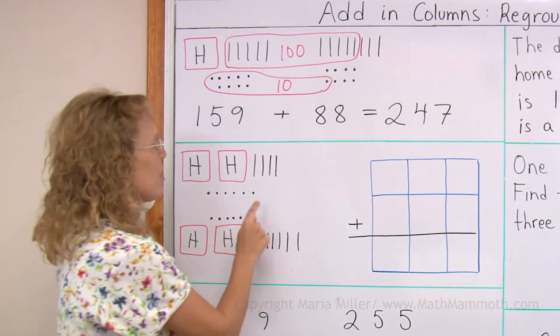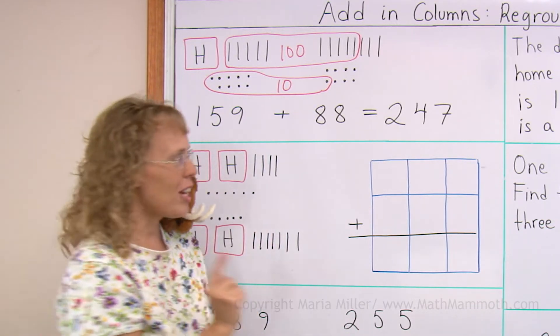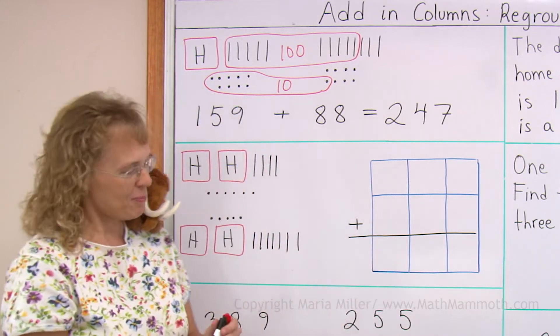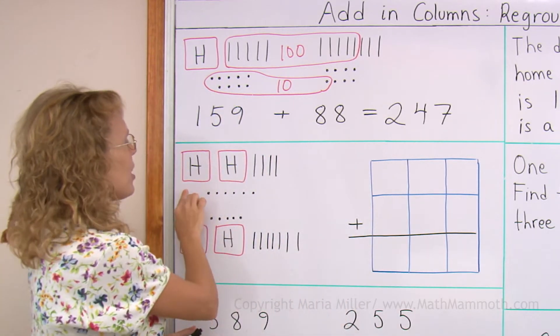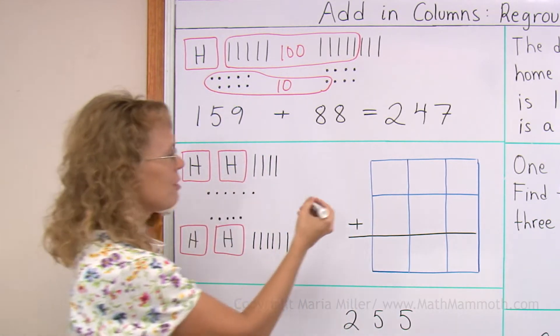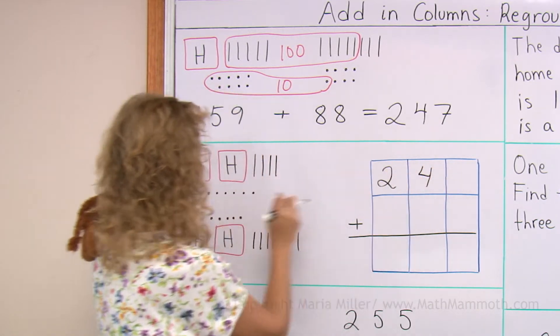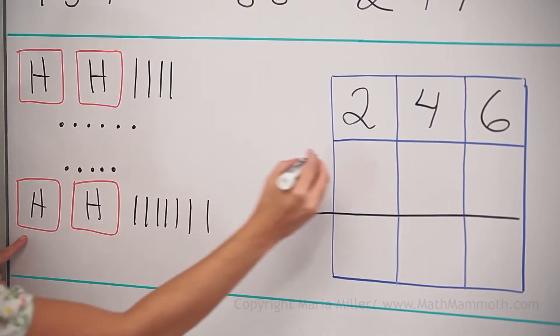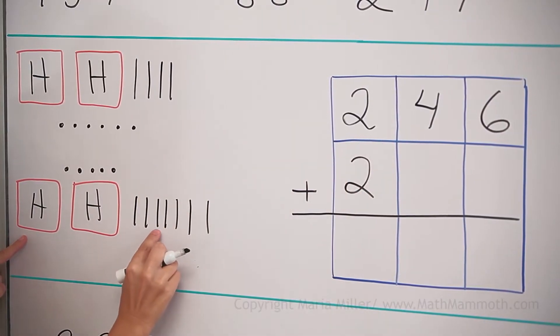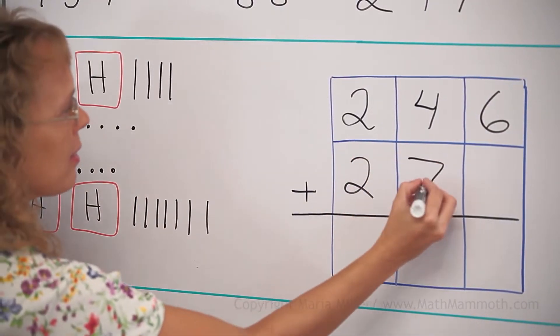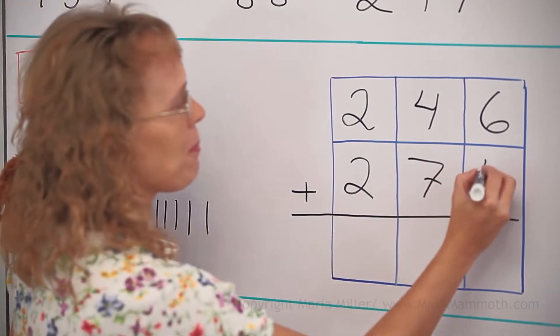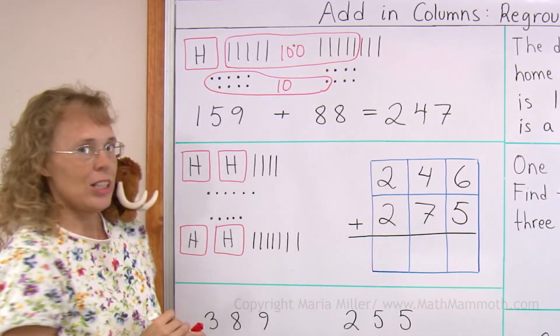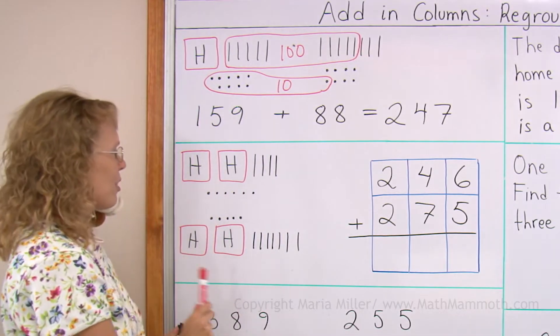Now we do the same with the visual model here and also adding in columns in the grid. My number to add here is 246. And the other number is 200, 1, 2, 3, 4, 5, 6, 7, and 5.